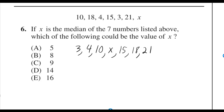If x is the median of the seven numbers listed above, which of the following could be the value of x? I first arranged the numbers from least to greatest, and I knew that x would go in the middle because they told me it was the median. So if x has to be in the middle, it has to be between 10 and 15. And only 14 works.